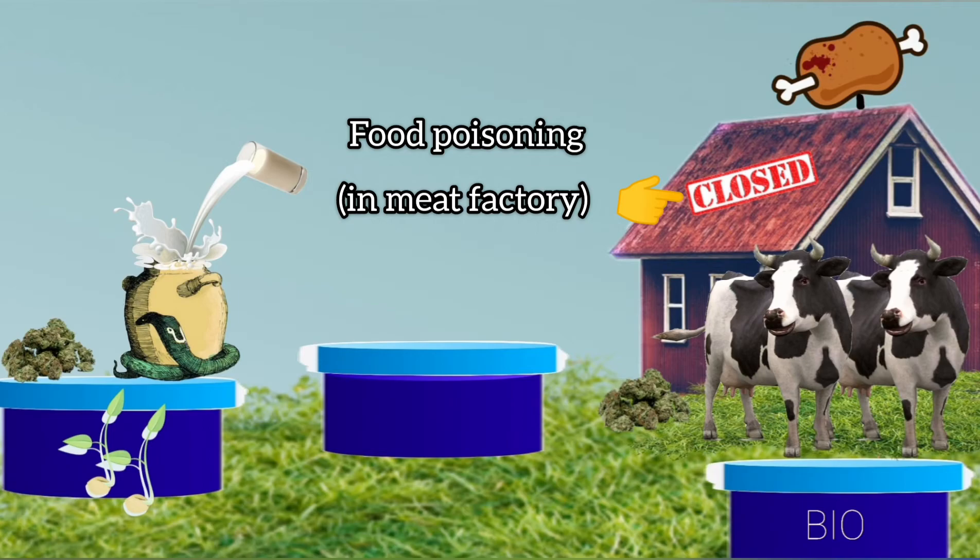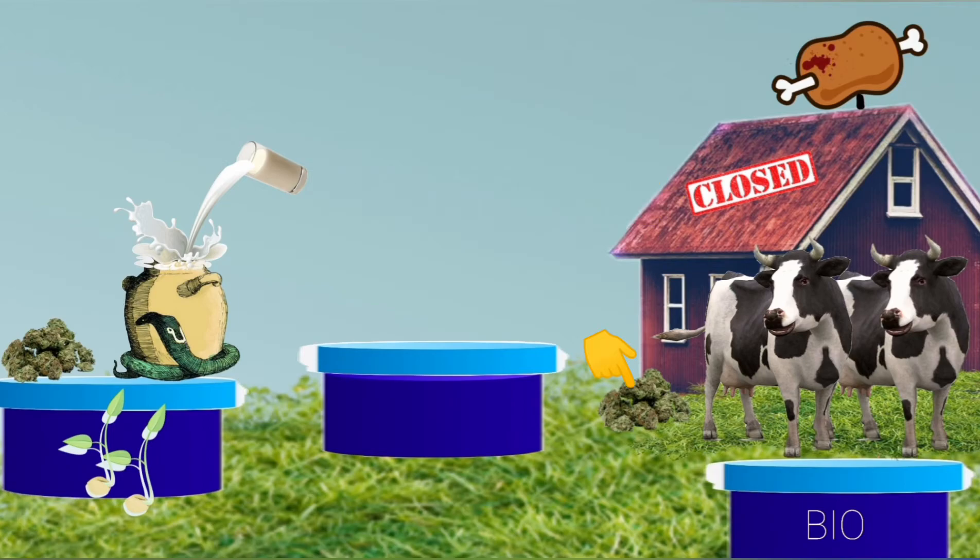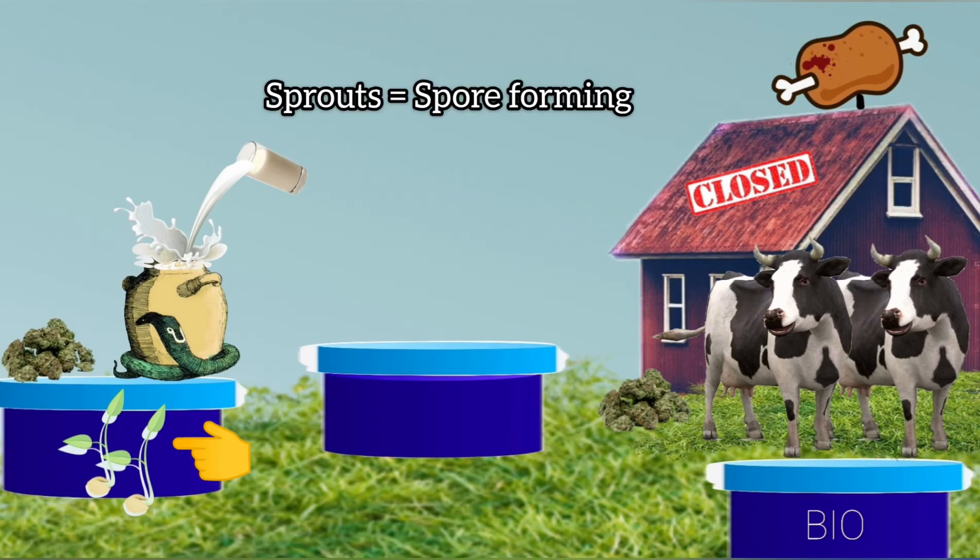The cow dung in this area has led to increased fertility of the soil and has led to the growth of alfalfa sprouts here. The sprouts are a reminder of spores, so Clostridium welchii and all other clostridia are spore forming bacteria.